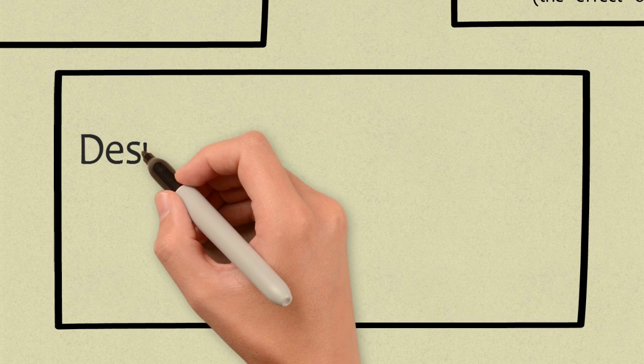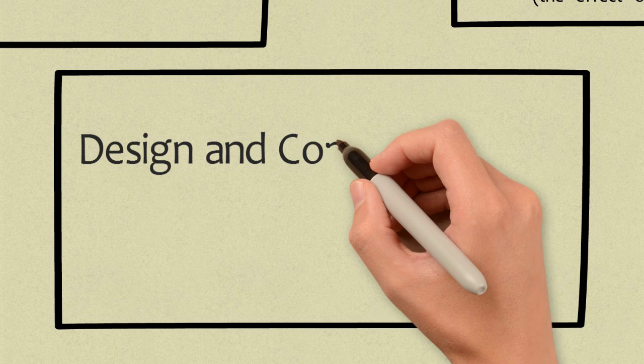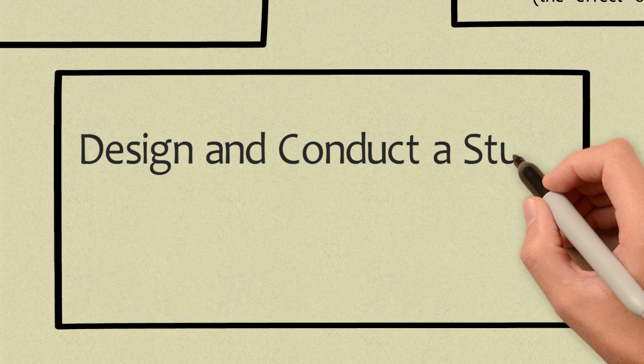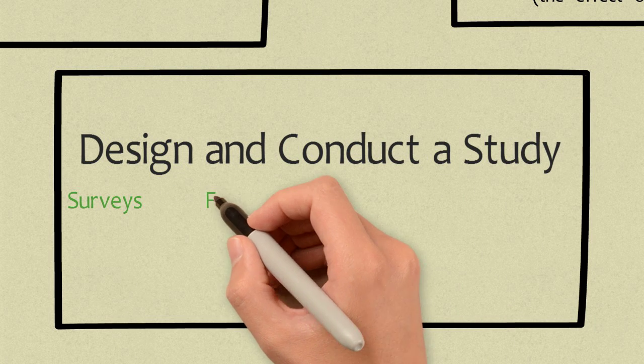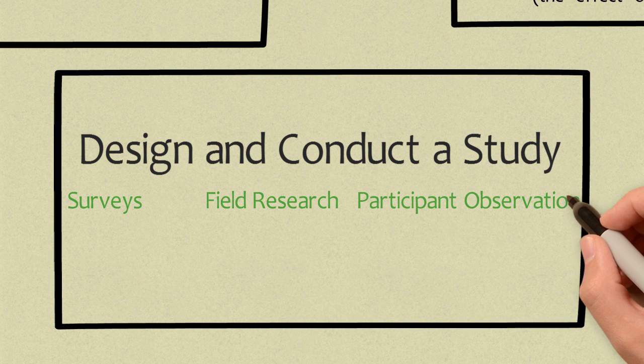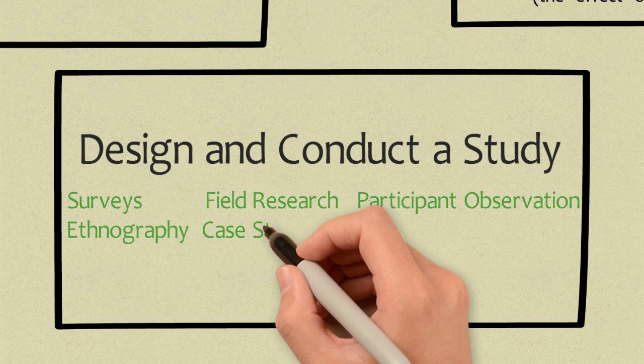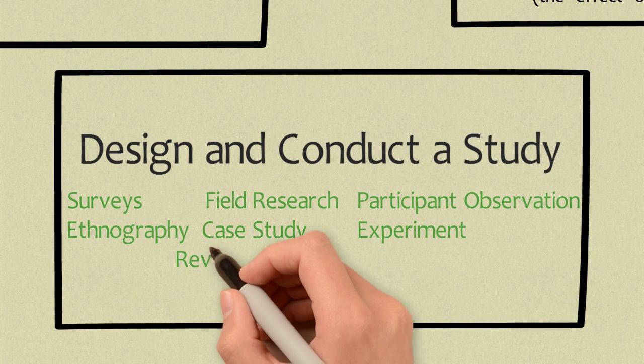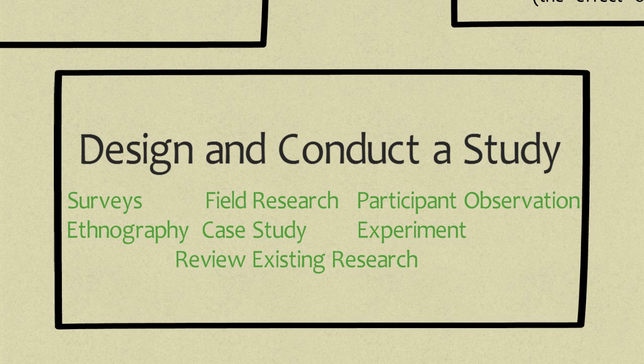The fourth step is to design and conduct a study. There are many different types of studies you can conduct including surveys, field research, engaging in participant observation, or in ethnography. You can conduct an analysis of a single event or a person through a case study, design an experiment, or review existing research. Each of these methods are a distinct approach, serve a specific purpose, and are discussed in depth in our text.